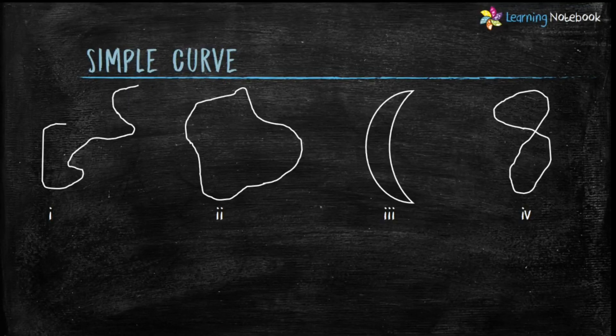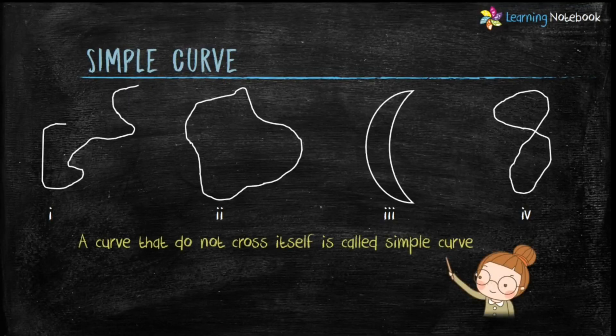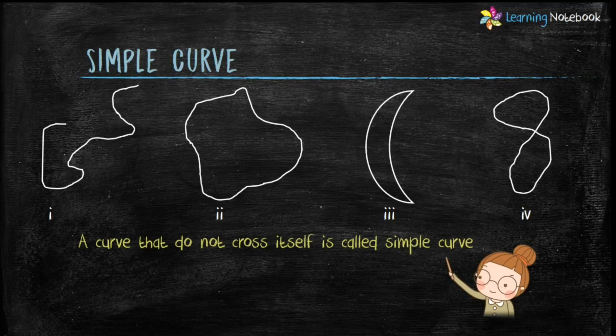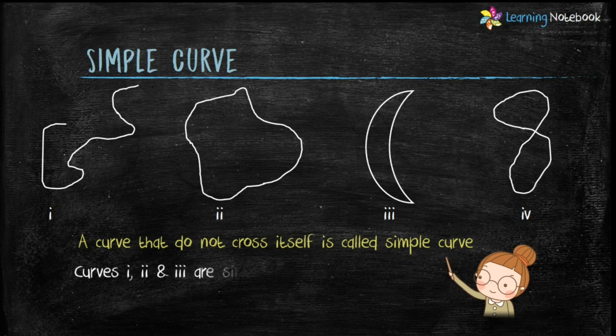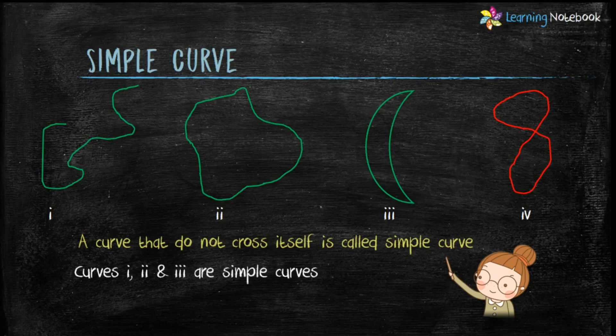Let's understand simple curve. A curve that do not cross itself is called a simple curve. Out of these 4 curves, 1st, 2nd and 3rd are simple curves. And 4th is not a simple curve because it is crossing itself.